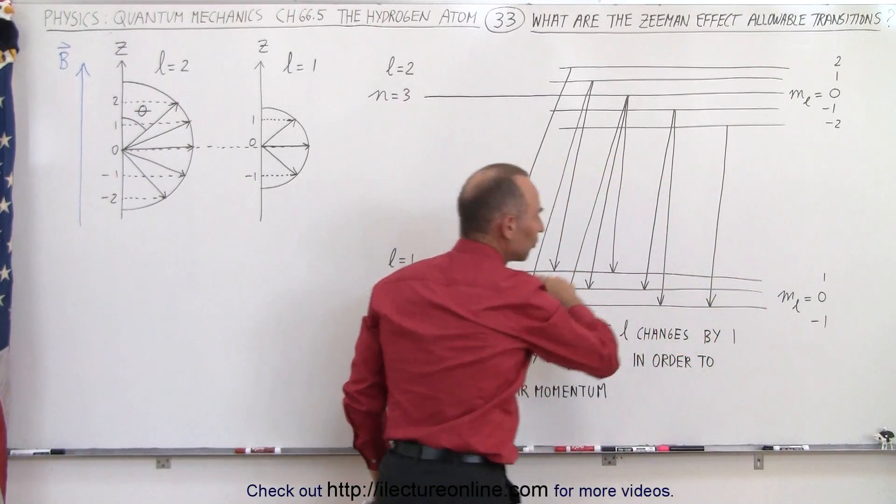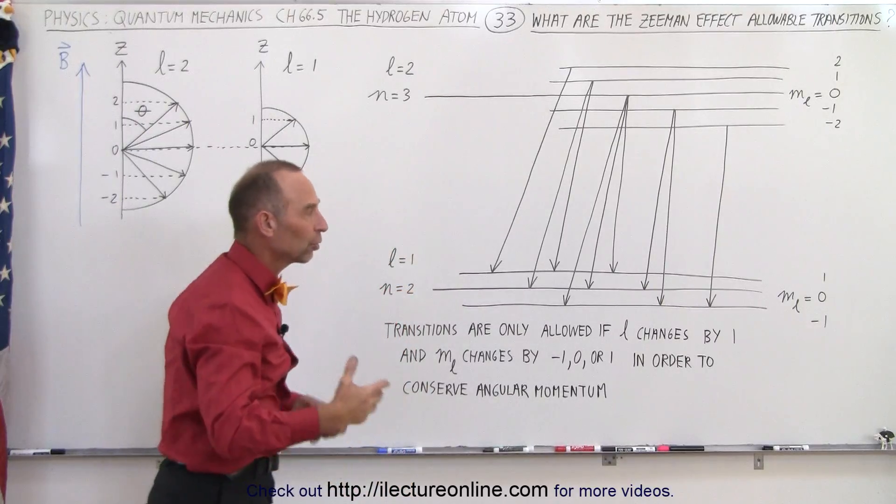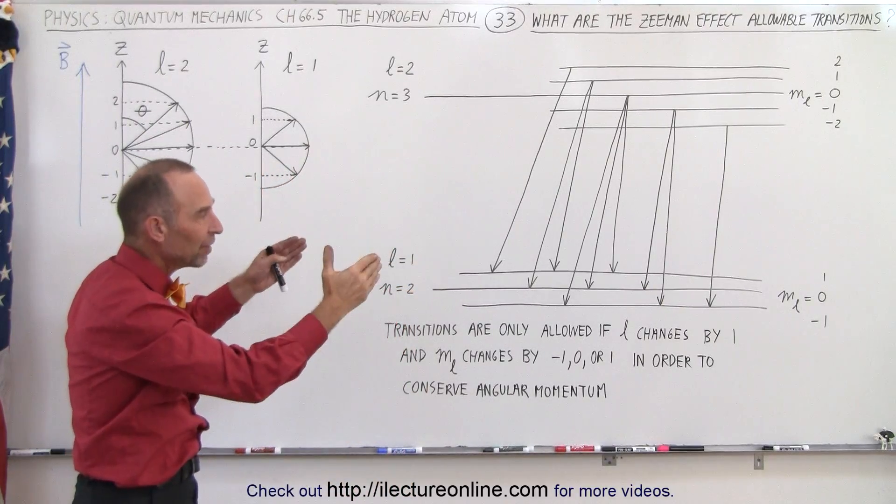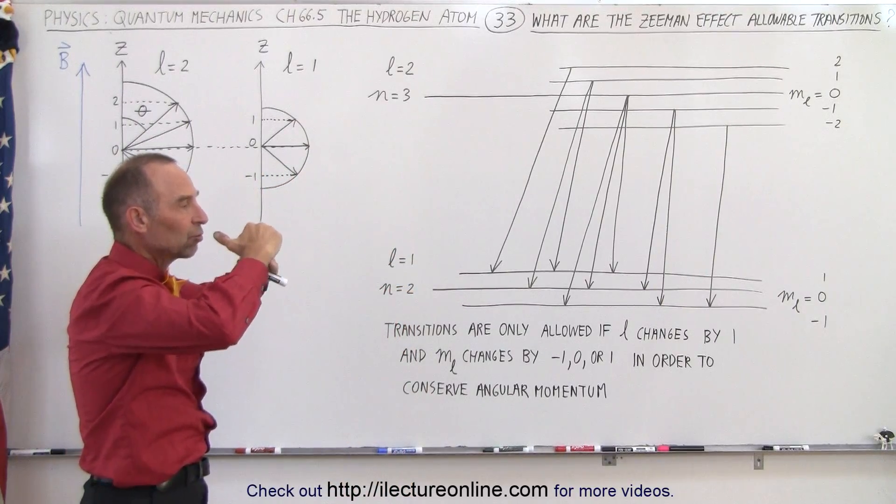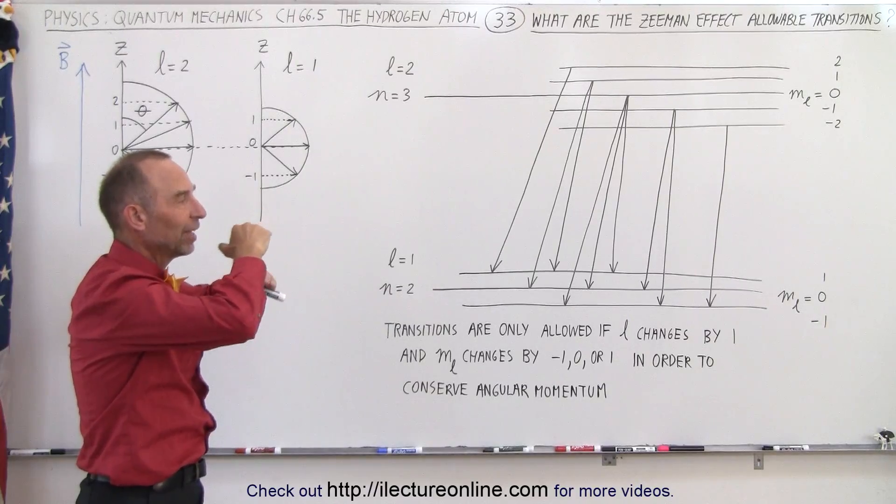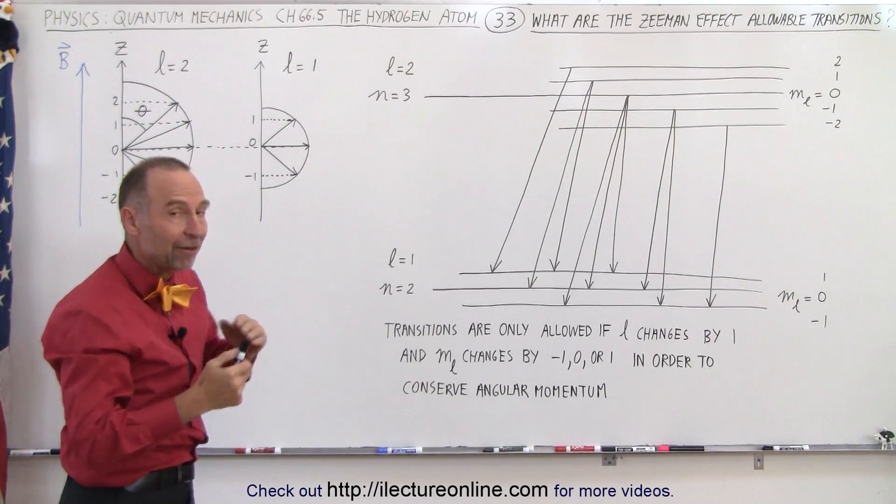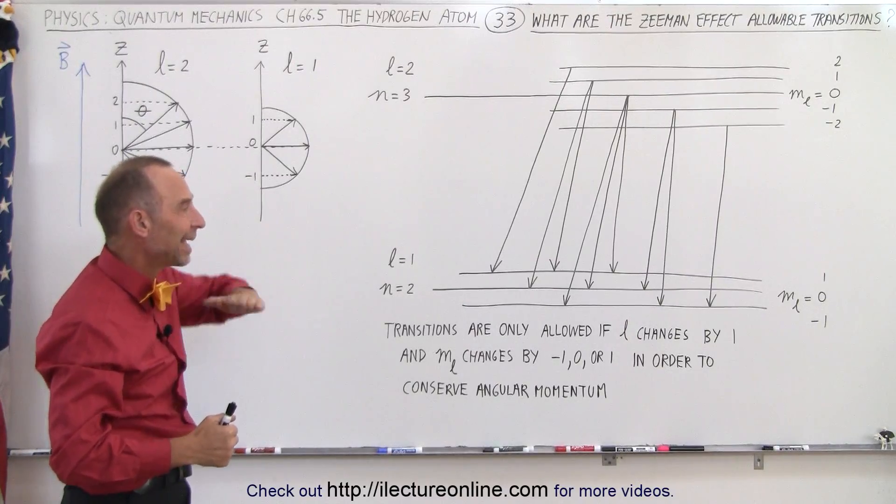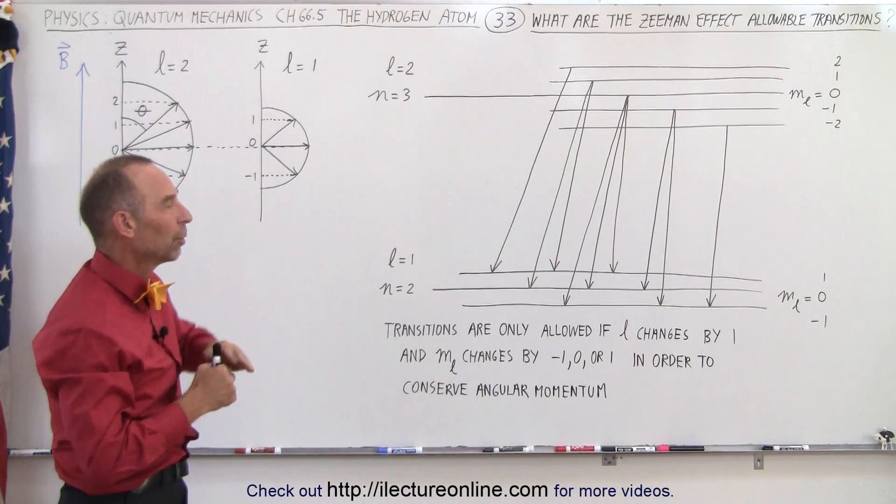Again, these energy differences are caused by the Zeeman effect, which are caused by applying a magnetic field in such a way that there's a slight transition, or slight differences in the various energies an electron can have due to the orientation of its angular momentum.